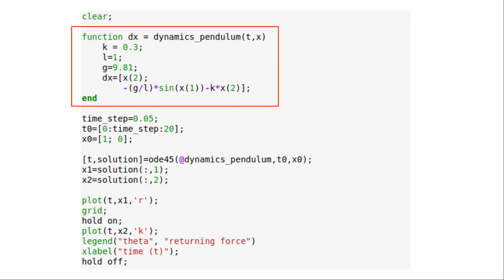The first step is to define a function that is the system of differential equations so that Octave can use it. Let's take a look at the function named Dynamics Pendulum. It's convenient to define these parameters locally like k for friction, L for the pendulum arm and G for the gravitational constant. Note that here the value of k was arbitrarily chosen but I give an explanation for this at the end of the video.